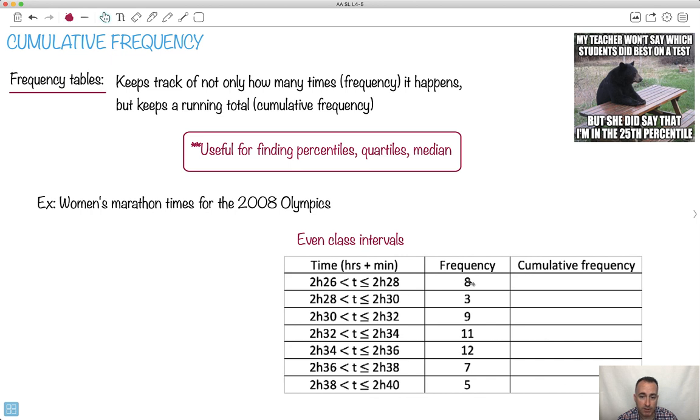And here we have the frequency. So there's 8 of these, there's 3 of these, there's 9 of these, and so on. Well, so far, this isn't so weird. The only new part here is this cumulative frequency part. That's the new part.